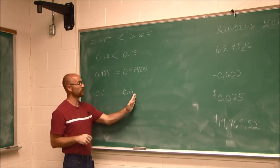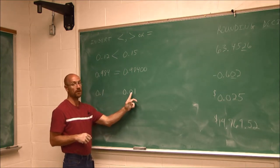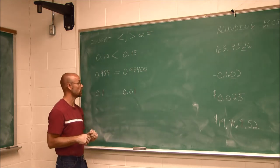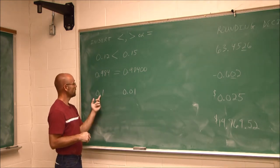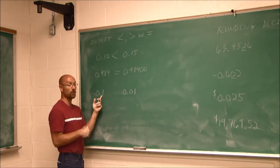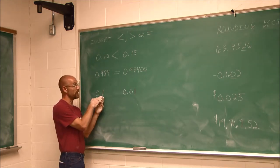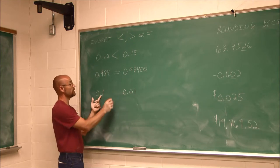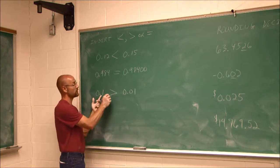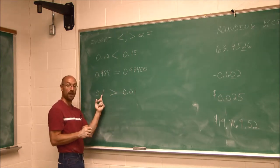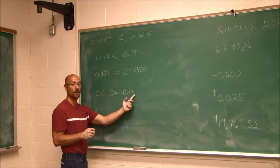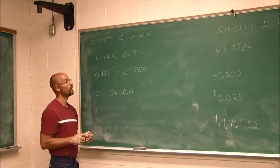So we can see that values further to the right of the decimal are smaller and smaller as you go right. 1 tenth — if we think of it in terms of money, this would be a dime; 1 one-hundredth would be a penny. A dime is greater than a penny. So 1 tenth is greater than 1 one-hundredth.